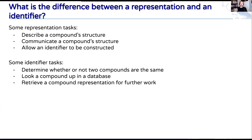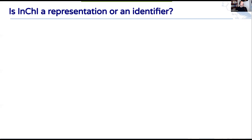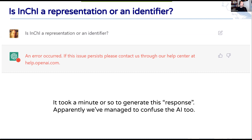Tasks you might do with representations include describing a compound structure, communicating that structure, or allowing an identifier to be constructed. With identifiers, you determine whether two compounds are the same, look compounds up in databases, or retrieve a compound representation for further work. So is InChI a representation or an identifier? I asked ChatGPT and it couldn't come up with an answer — there's genuine confusion in the community about this, and it seems we've managed to transmit our confusion to the machines as well.